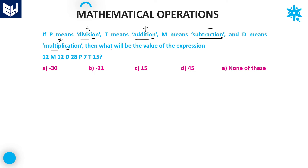The question is: what will be the value of the expression 12 M 12 D 28 P 7 T 15? Substituting: M is minus, D is multiplication, P is divided by, and T is addition. So the expression becomes: 12 minus 12 into 28 divided by 7 plus 15.